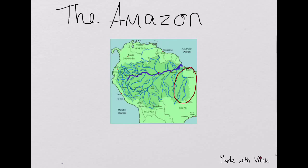This is the source of the Amazon River, this is where the Amazon River starts. This is the main part of the river, it's mainly known as the Meander. This is the mouth of the Amazon River.